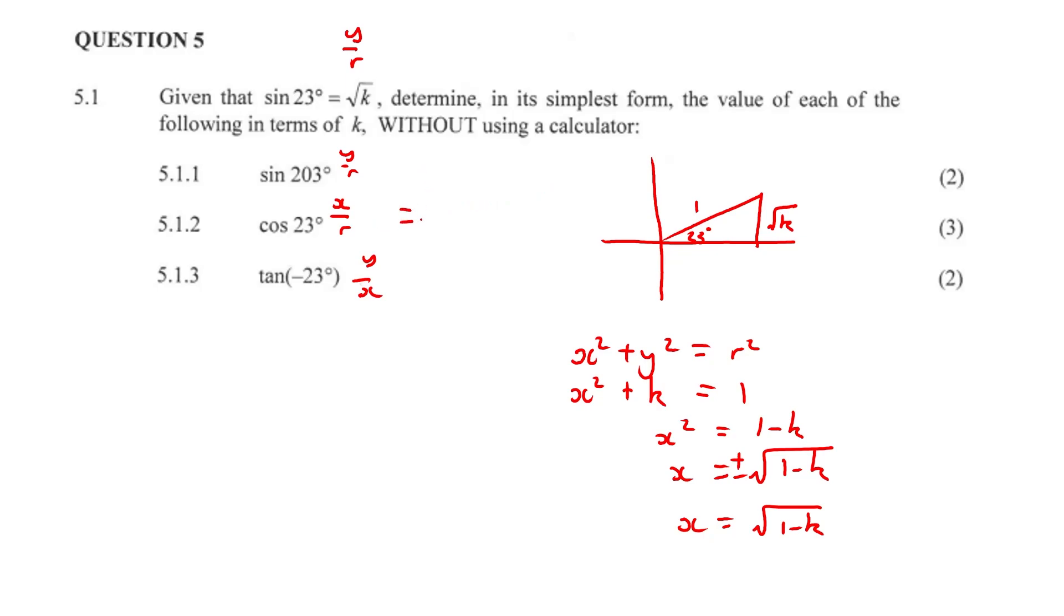So in other words, cos 23 is just going to be equal to root 1 minus K over 1, because that's what our radius was. So that is question 5.1.2.